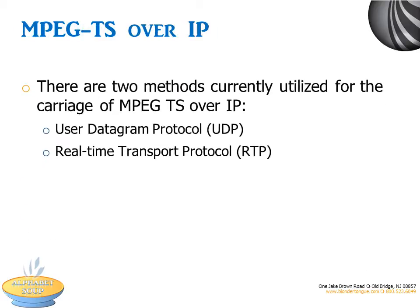How is an MPEG transport stream carried over an IP network? The two methods are User Data Protocol, or UDP, and Real-Time Transport Protocol, or RTP. But where do UDP and RTP fit into the OSI model we talked about when we defined the MPEG transport stream?